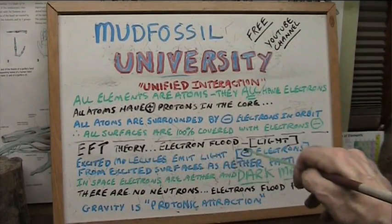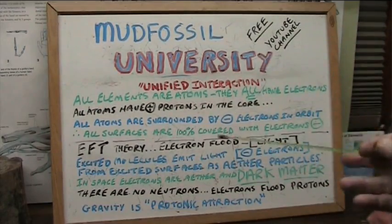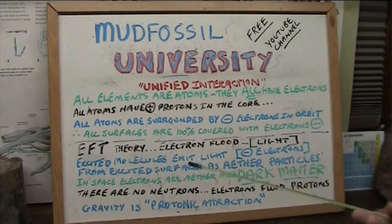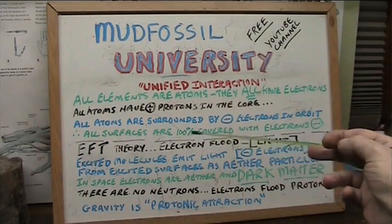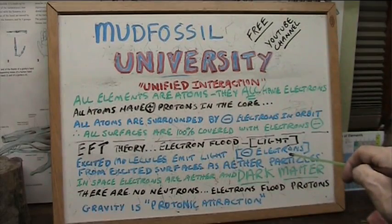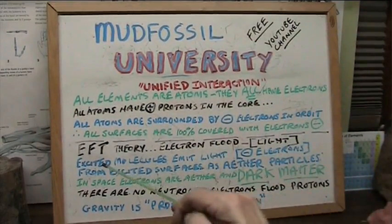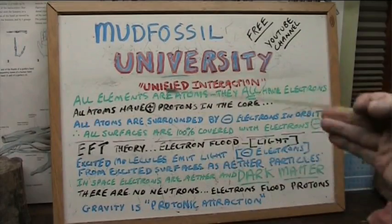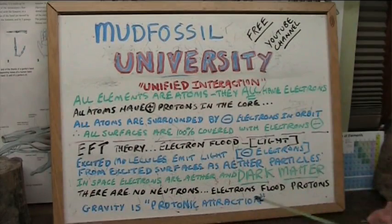EFT theory is electron flood theory, which is light. Light is electrons — it's not nothing particles, it's electrons. They come from the sun and they float through space to us, then they collide — that's when their energy is seen. Excited molecules emit light. When anything shakes and gets excited and hot, it glows and starts emitting light. They are electrons — negative electrons — they're the things that coat everything. They're shaking them and they kick off a piece of paint, that's all it is. From these excited surfaces they're thrown away as ether — they're particles, they're free electrons. If they're in space, the electrons are ether and they're dark matter because they don't interact with anything.